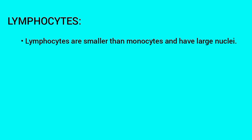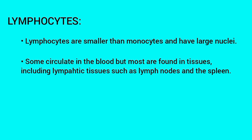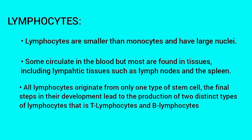Now let us see about lymphocytes. Lymphocytes are smaller than monocytes and have large nuclei. Some circulate in the blood, but most are found in tissues, including lymphatic tissues such as lymph nodes and the spleen. All lymphocytes originate from only one type of stem cell. The final steps in their development lead to the production of two distinct types: T-lymphocytes and B-lymphocytes.